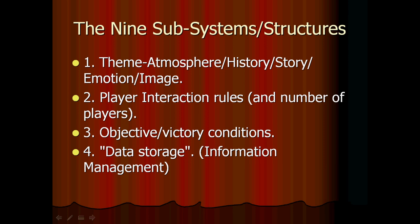The fourth structure is data storage or information management. In a board game, frequently that's the board. In a card game, it's the cards. In a video game, the computer is storing information somewhere and may actually have something that amounts to a board. In the computer game Civilization, you have a square grid, or in Civ V, a hex grid that regularizes movement and controls the location of units — a board, in effect. But every game has to store information unless it's a very, very simple game. Even in rock, paper, scissors, if you play best two out of three, there's data storage in the minds of the players because they keep track of who won the previous sessions.